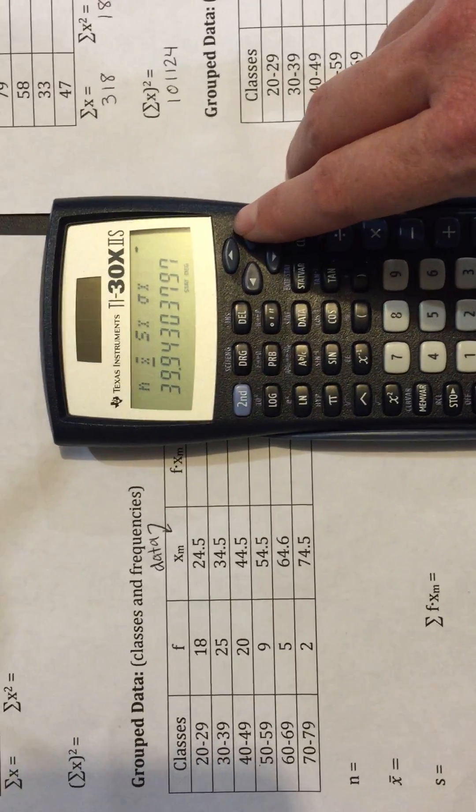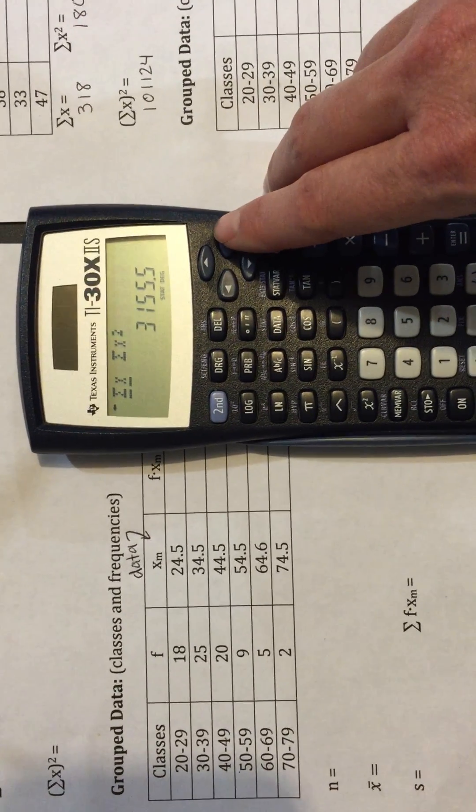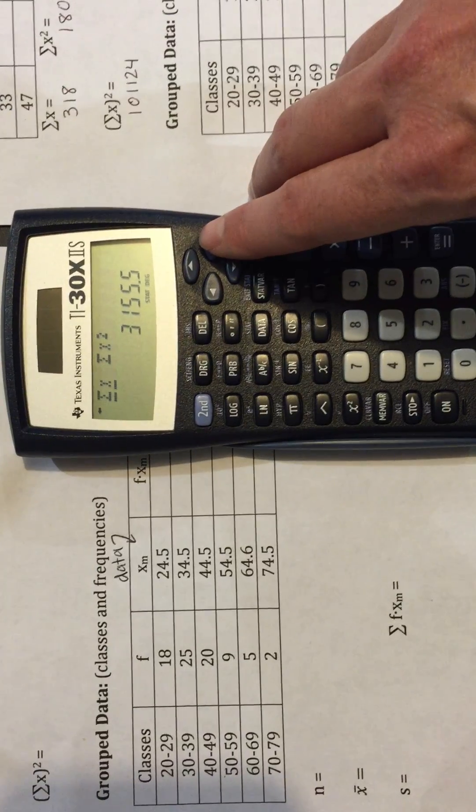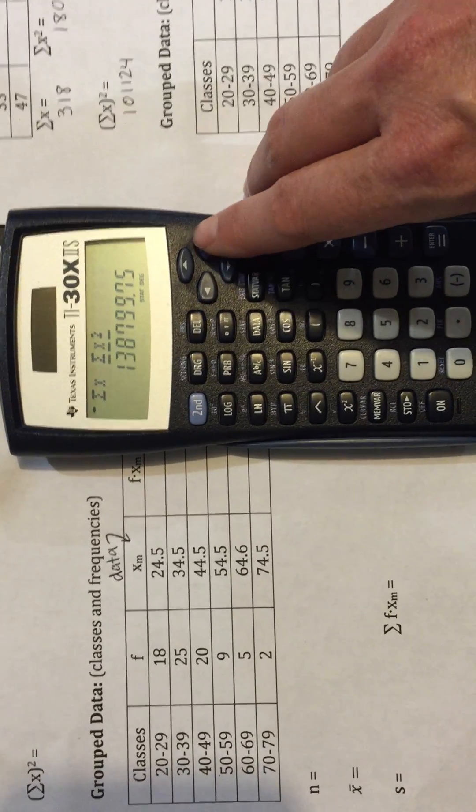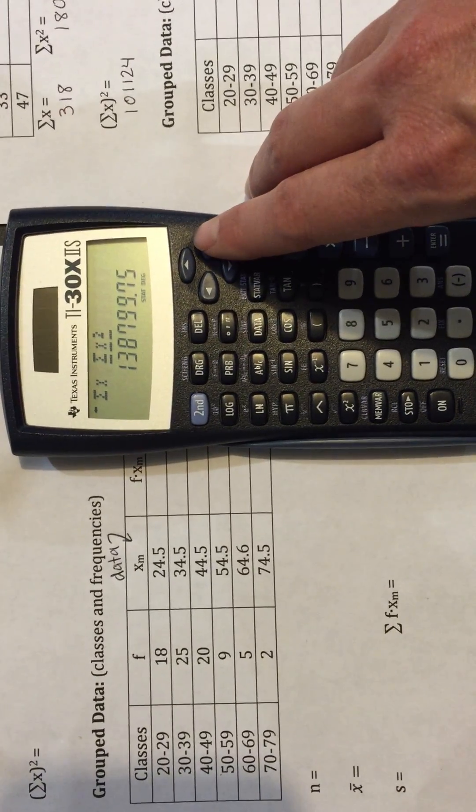X bar, 39.9. Standard deviation. Sum of the X's is really sum of F times XM. Sum of the X's squared is really sum of F times XM squared.